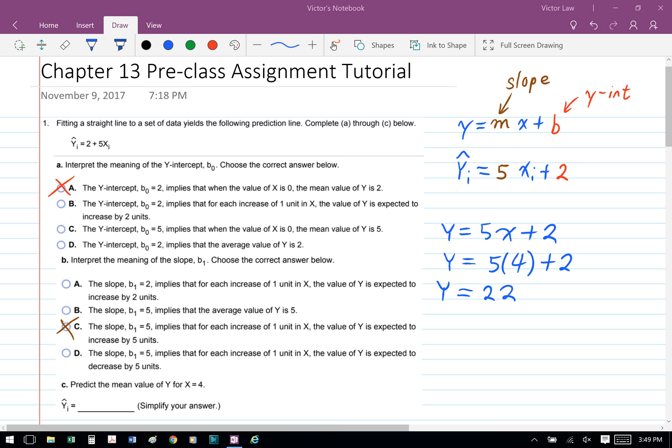For Part C, we know that y equals 5x plus 2. Since x equals 4, we can substitute 4 in for x. So we have y equals 5 times 4 plus 2, which gives us y equals 22.